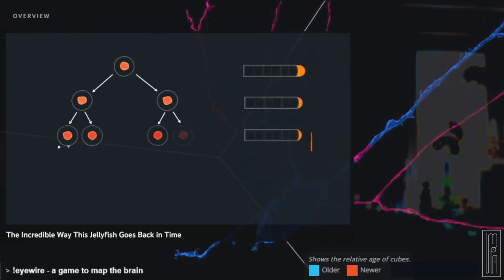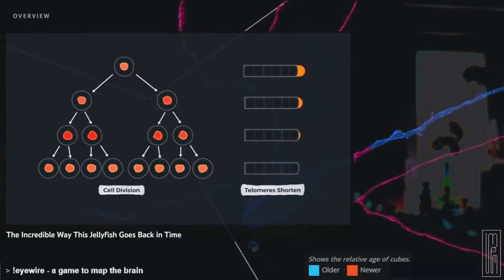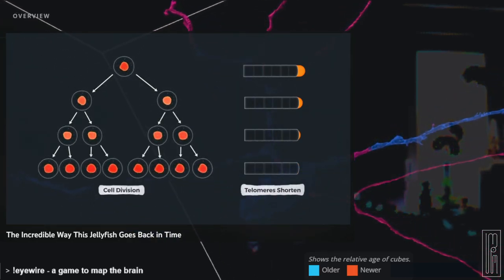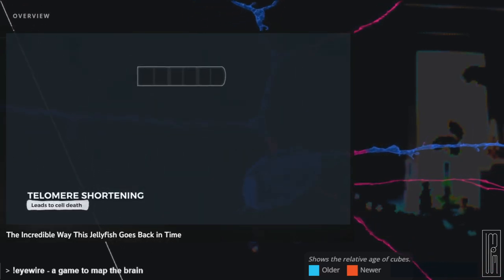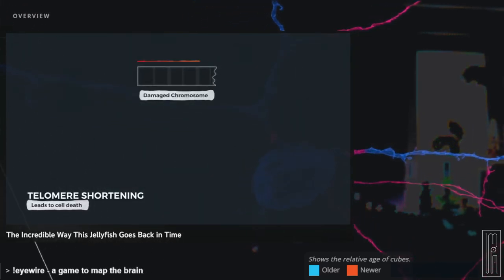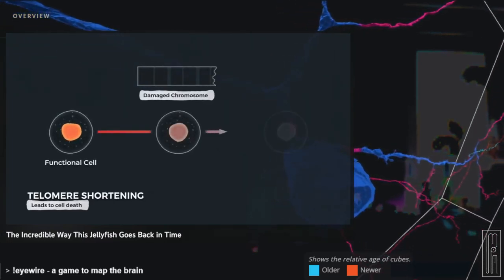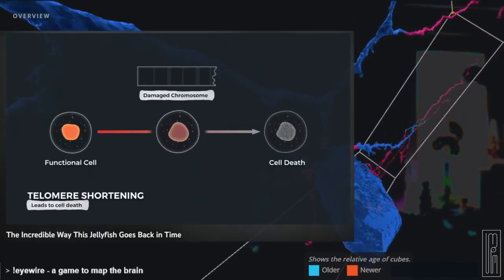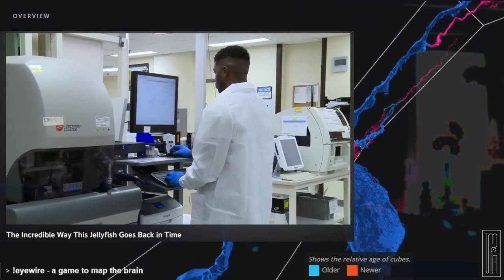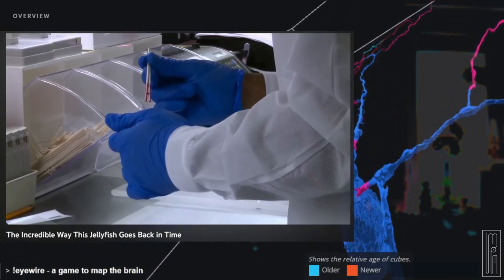Every time a cell replicates, a little bit of DNA is lost from the telomeres. But because they are extremely long, there's a lot to lose before any of the important DNA is affected. But eventually, telomeres are ground down to nothing, and DNA is more prone to damage. This leads to cell death, and ultimately, the death of an organism. This is what happens in humans. Telomere shortening, as it's known, is a key element of aging.